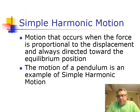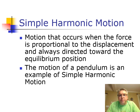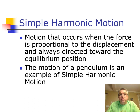Let's define simple harmonic motion. Simple harmonic motion occurs when the motion of an object occurs because the force is proportional to the displacement of the object, and the force is always directed back toward the equilibrium position. You need two things: the force always oriented toward equilibrium, and the force proportional to displacement — the bigger the displacement, the greater the force; the smaller the displacement, the smaller the force.